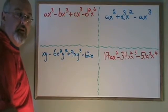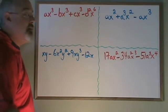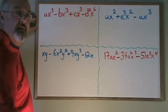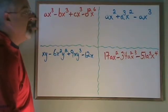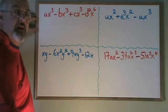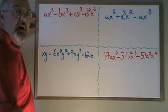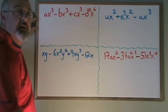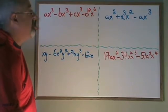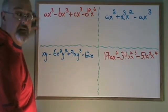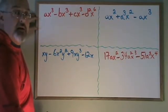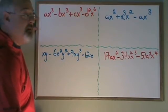The common factor method for factoring involves taking out the greatest common factor of each of the terms in the expression. Knowing how to find factors and greatest common factors with numbers is one of the building blocks to understanding this, but it does not only involve numbers at this stage.